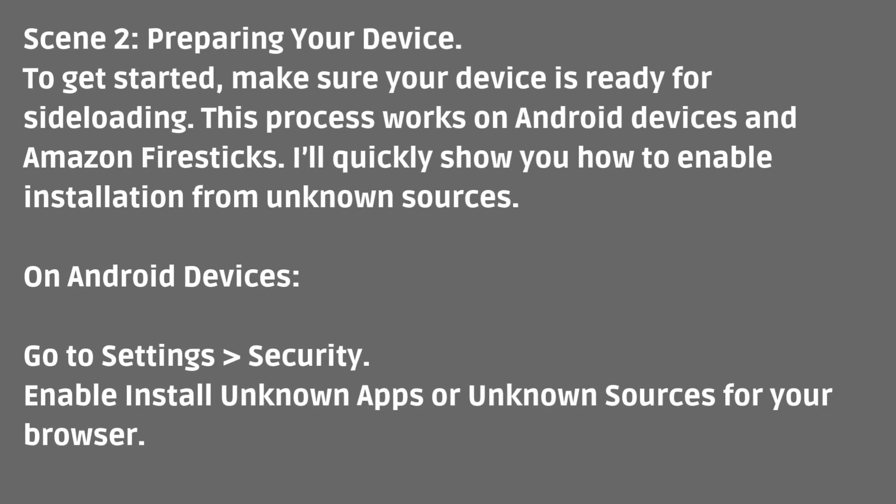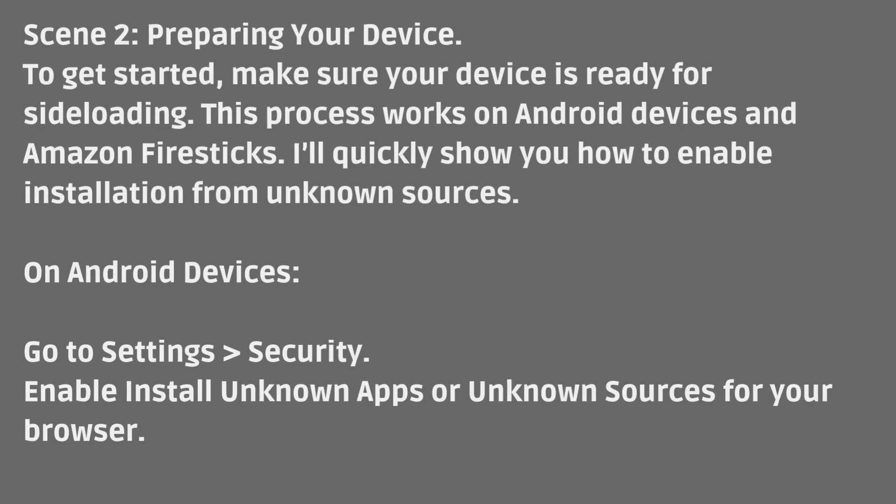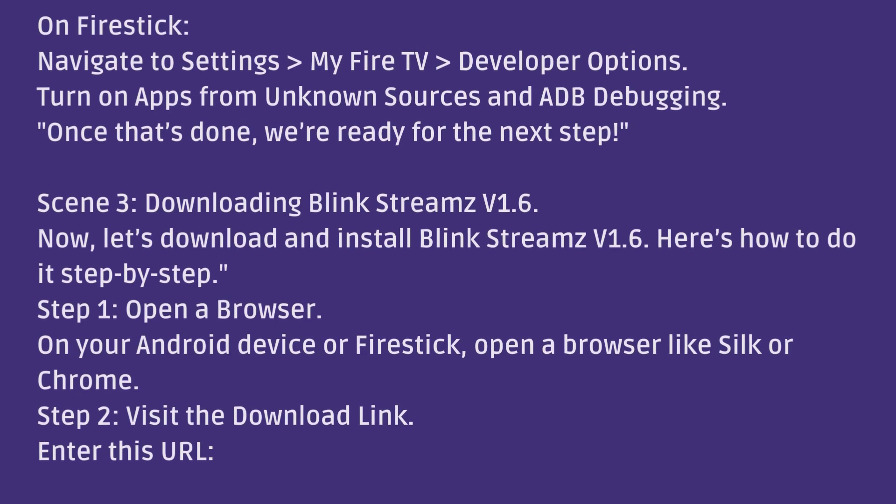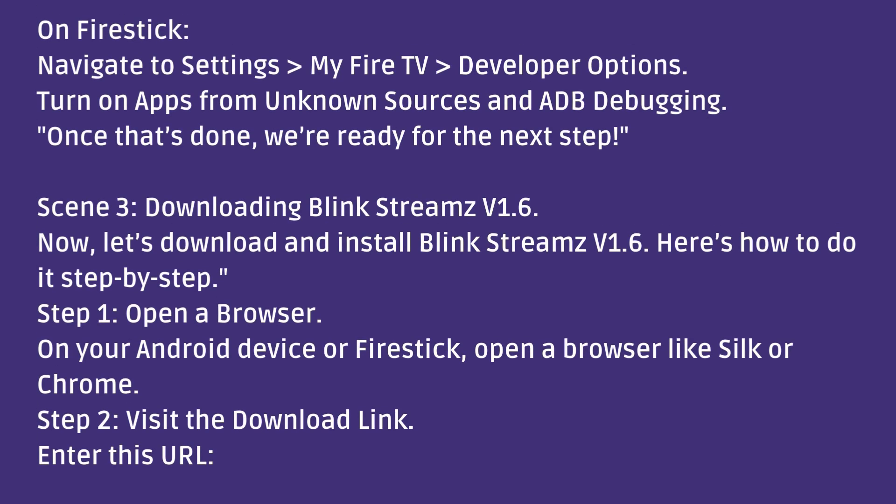To get started, make sure your device is ready for sideloading. This process works on Android devices and Amazon Fire Sticks. On Android devices, go to Settings > Security and enable Install Unknown Apps or Unknown Sources for your browser. On Fire Stick, navigate to Settings > My Fire TV > Developer Options, and turn on Apps from Unknown Sources and ADB Debugging. Once that's done, we're ready for the next step.